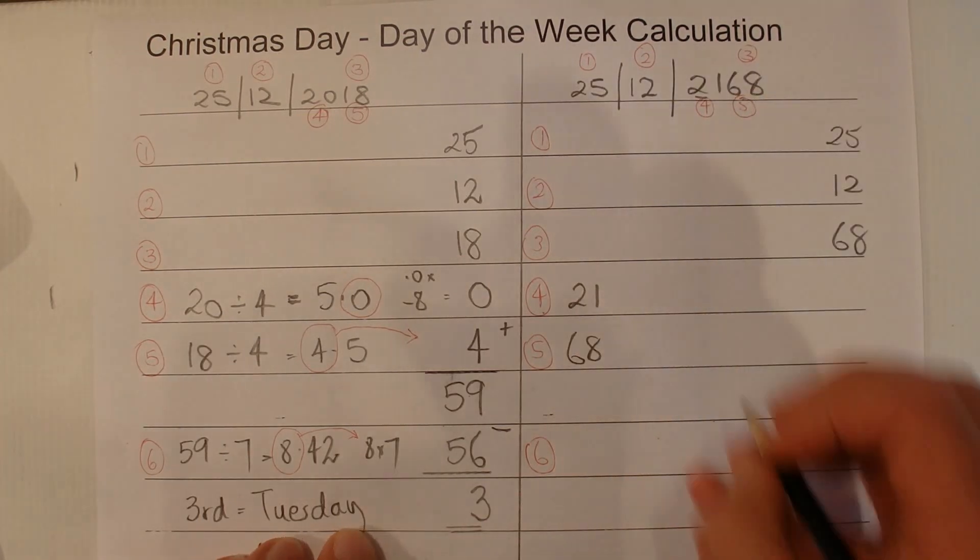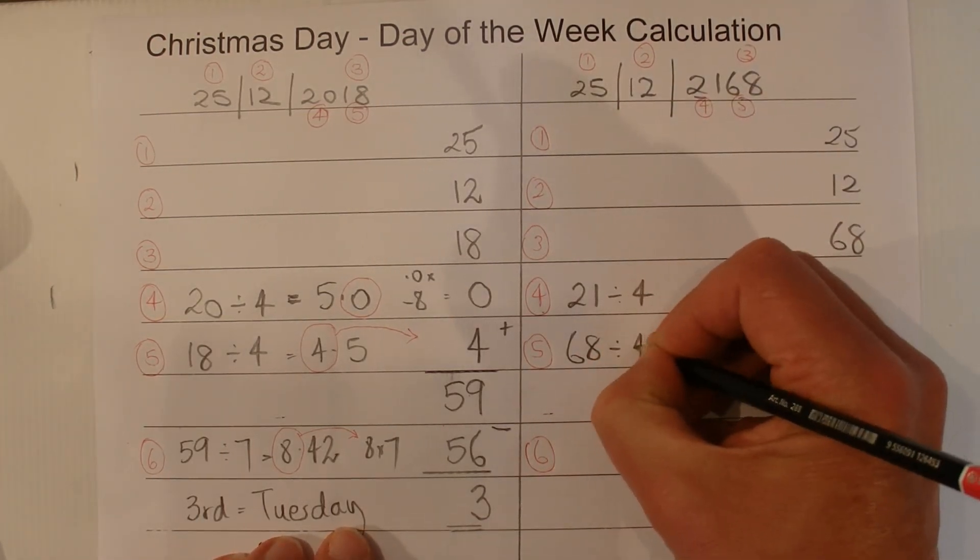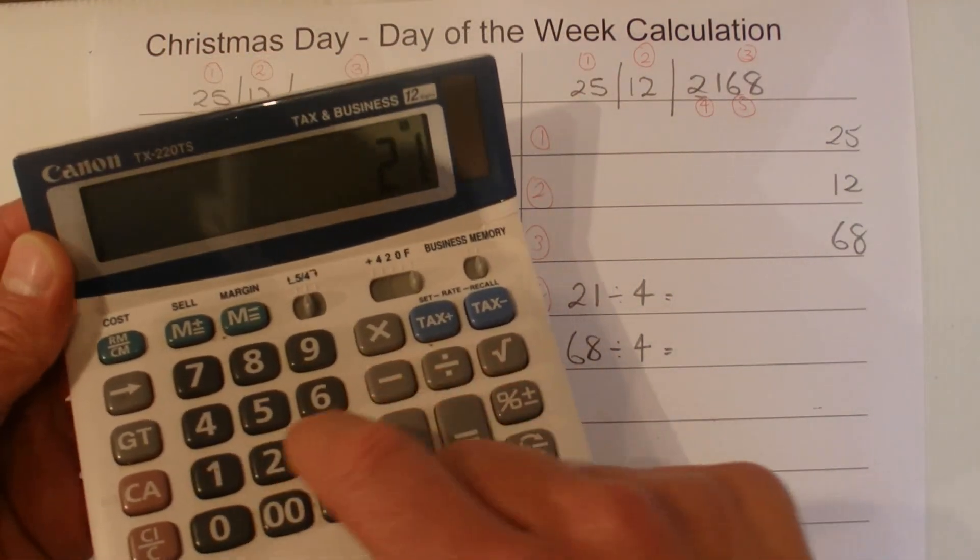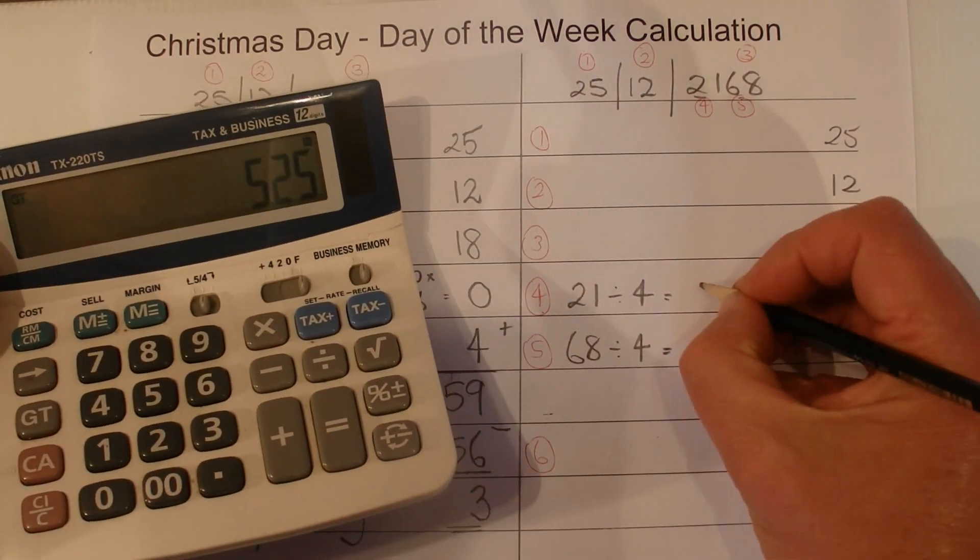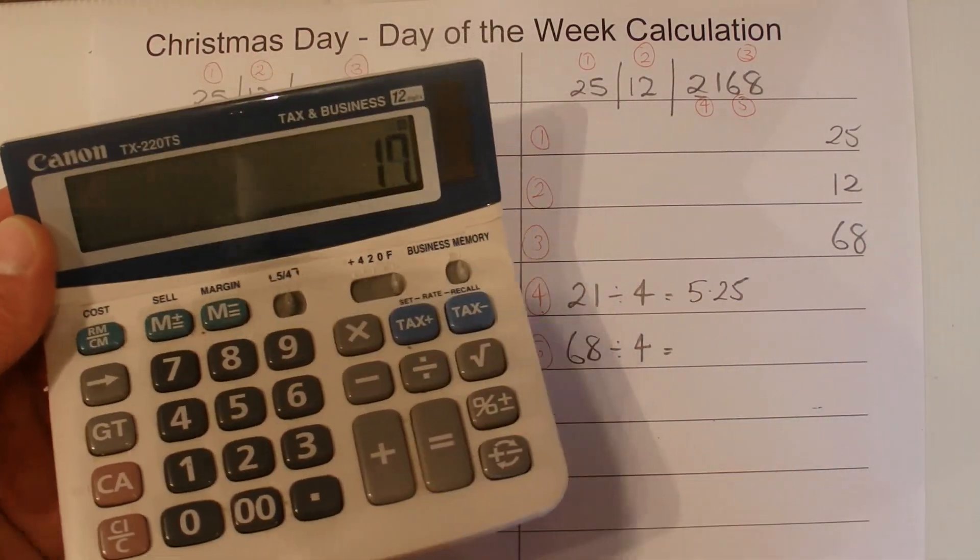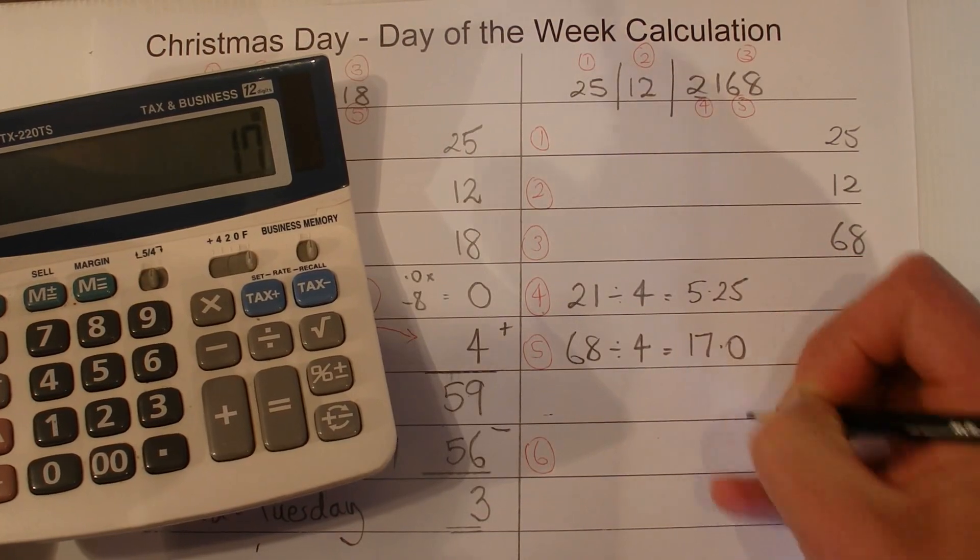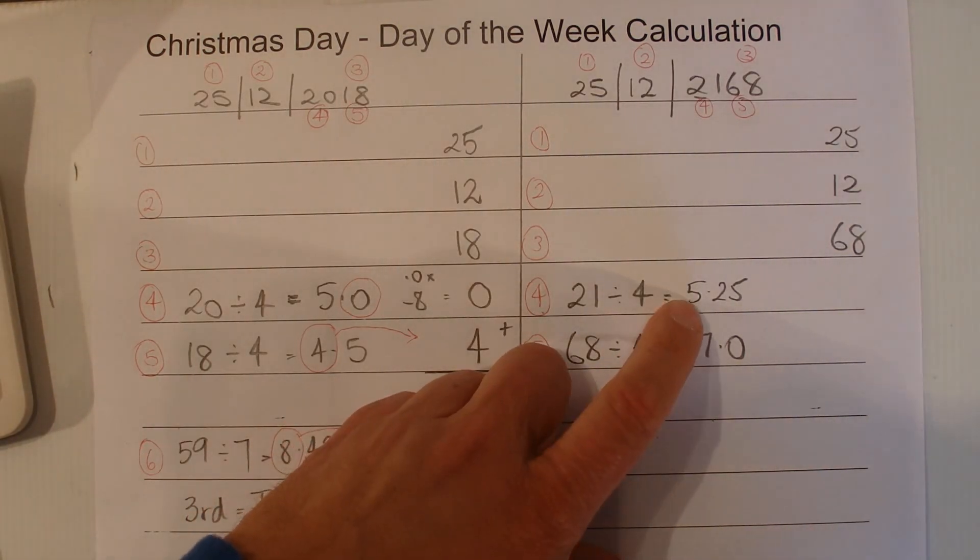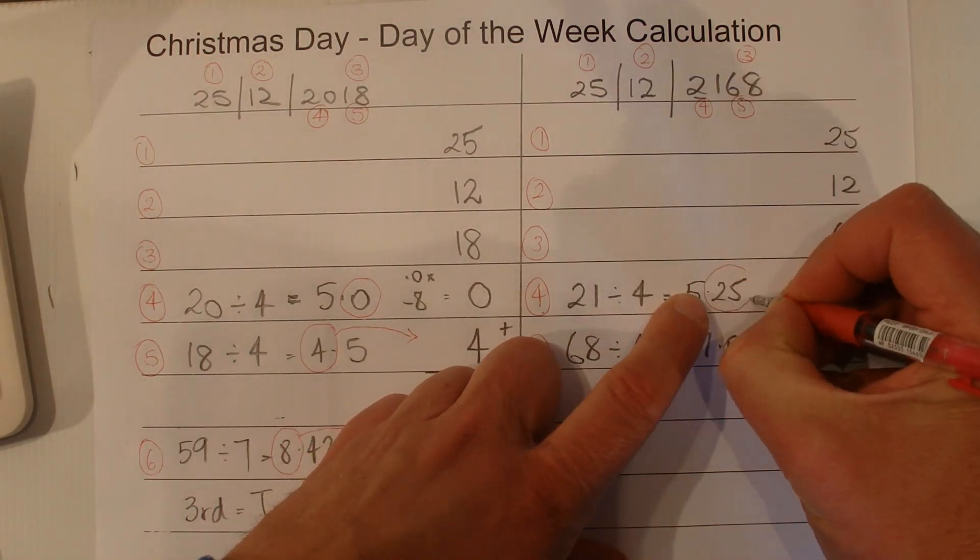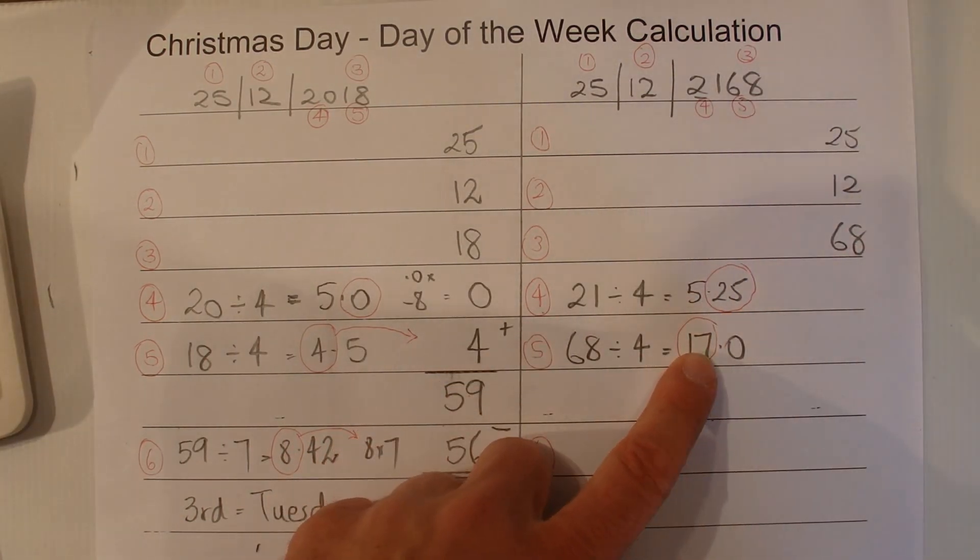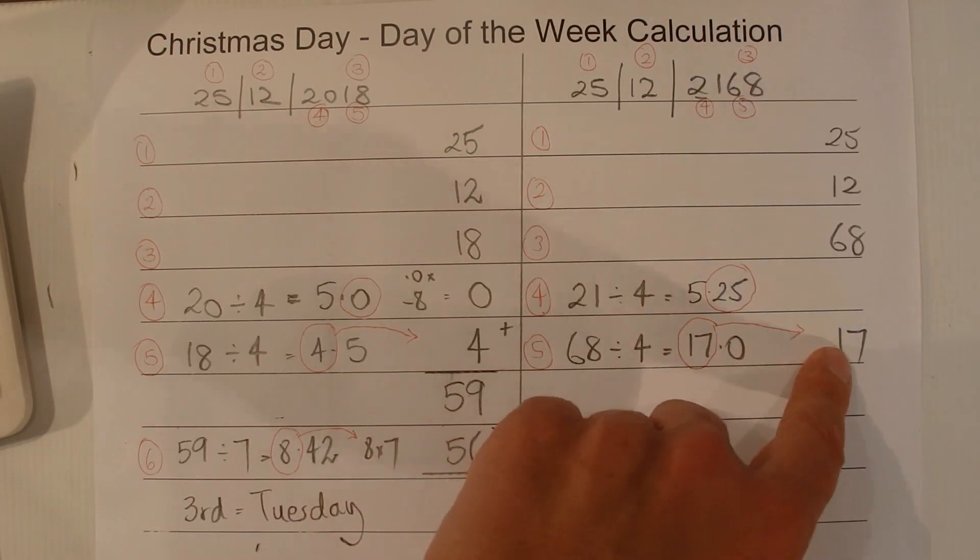And then we just need to split up the year into 21 and 68. Part 4 and part 5. Once again we divide both of those numbers by 4. And I'll use that to do my calculator for those ones. So 21 divided by 4 is 5.25. And 68 divided by 4 is 17.0 by that one. OK, so we've got 5.25, we're interested just in the 0.25 from this one. And we're interested in the whole number here, which is 17.